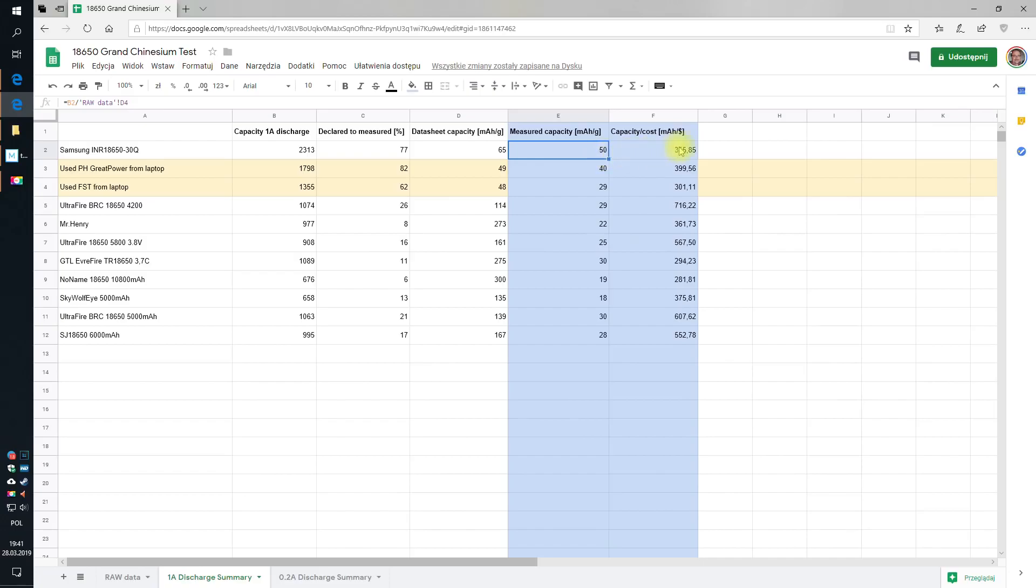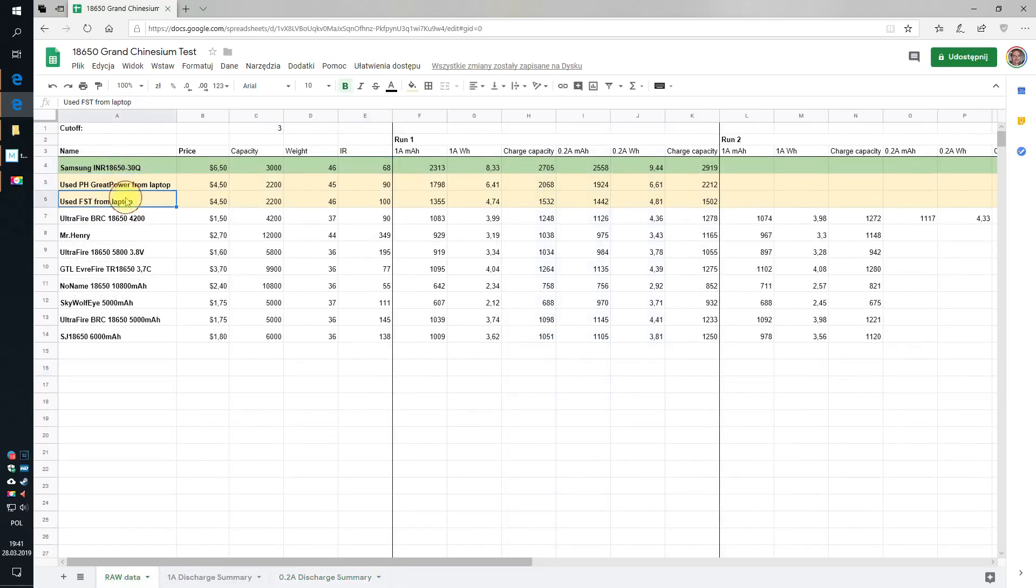So if we go to the summary of the one amp discharge, there is declared to measured 77% with the data sheet capacity, with 65 milliamp hours per gram and what we were able to measure. That means the capacity in milliamp hours per gram. This is our benchmark and the capacity to cost - for $1 you are getting 355 milliamp hours, and the same value for 0.2 amp discharge slightly different values. Next are super cheap used and really very very used batteries that cost that much when they were new but they were not new. I almost killed those laptop batteries, so here are the results, of course less.